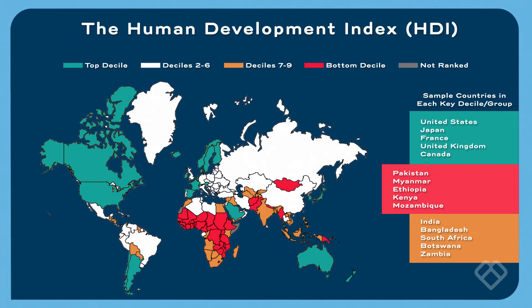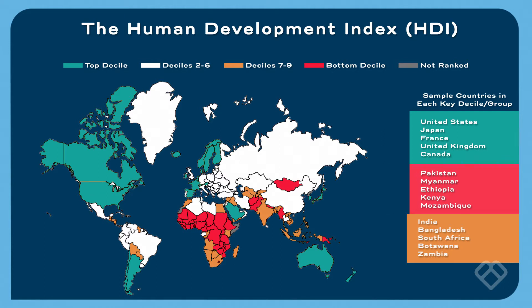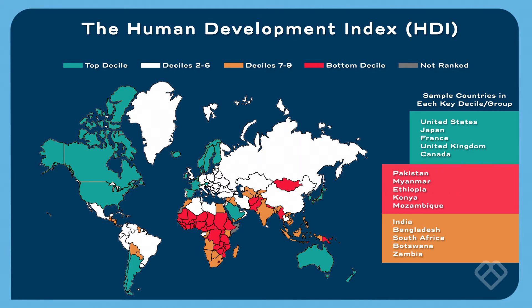The countries in red are the ones in the bottom decile, and many of them are in sub-Saharan Africa. Then there are the countries in orange, which are in deciles seven through nine — some of them are in Africa, some in South Asia and Southeast Asia, and so on. These are the countries we'll focus on because that's where these problems occur the most.